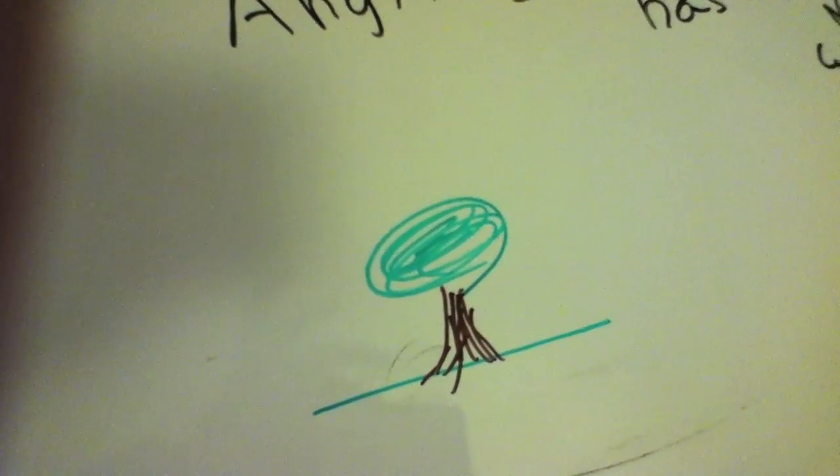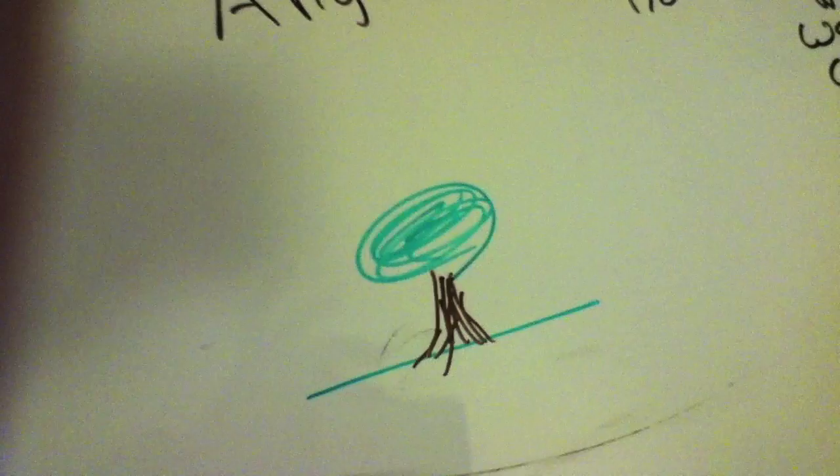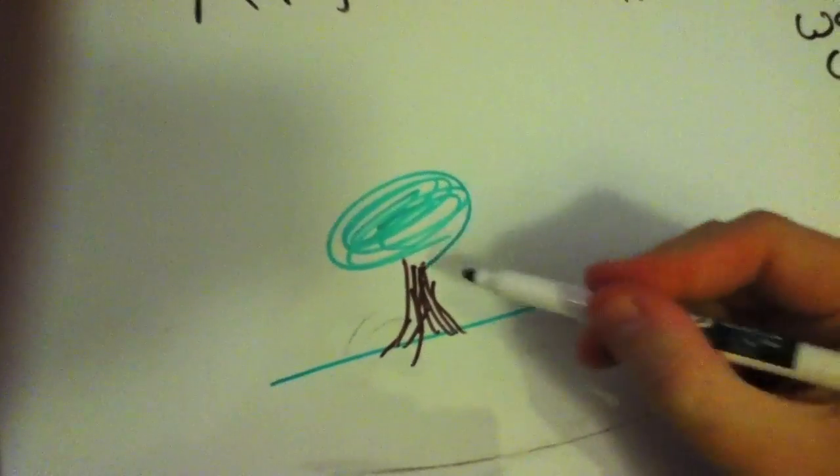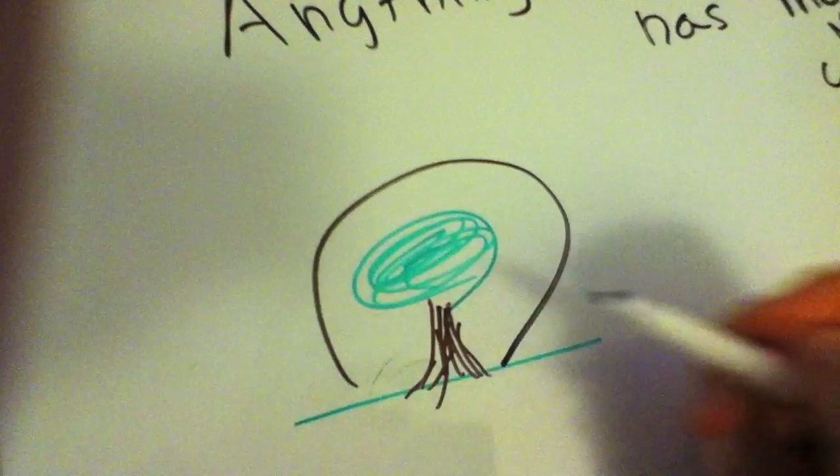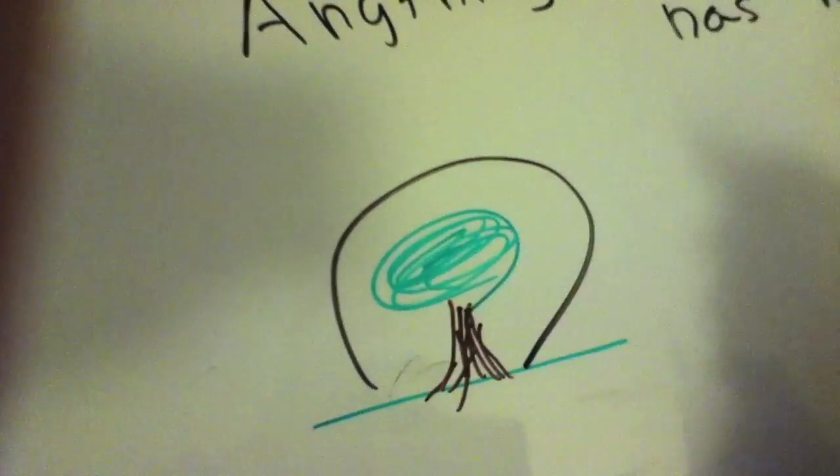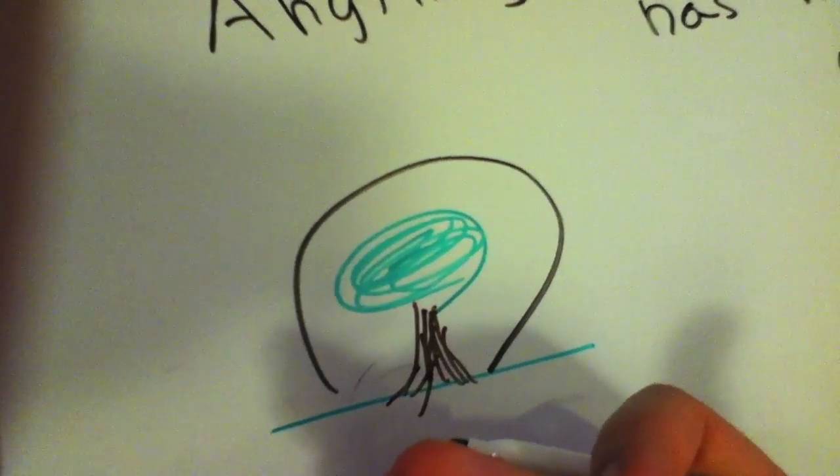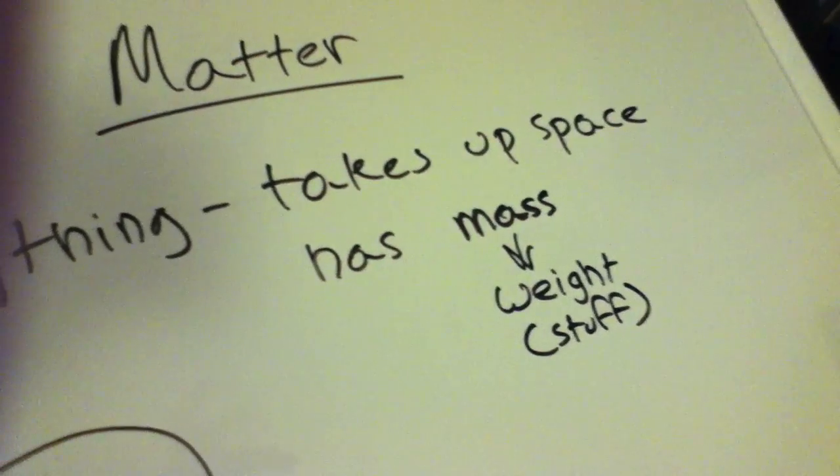So this tree, before we put the tree here, the field had an area, right? We put the tree here and it actually took up space in this field. There's less space in the field because the tree is here. So it has the first quality: takes up space.